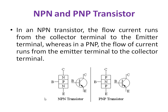So how can we remember the arrow direction? NPN means 'Never Point iN', so that's why it is pointing out. PNP means you can easily remember 'Point iN Permanently', so that's why it is pointing in. In this way you can easily remember the arrow direction of NPN and PNP transistors.